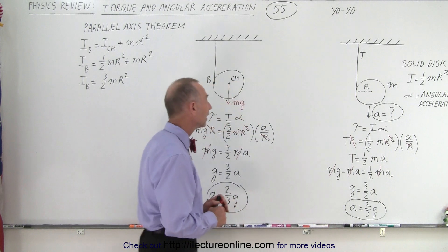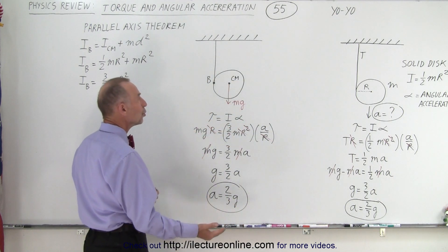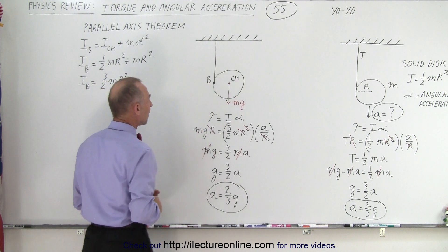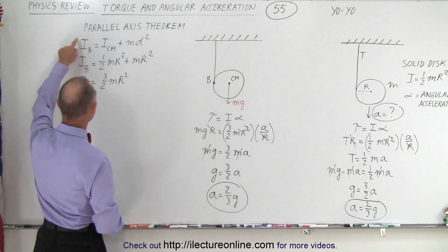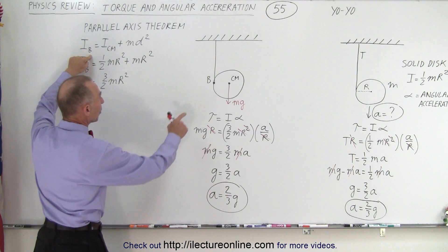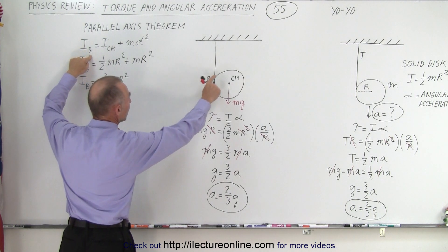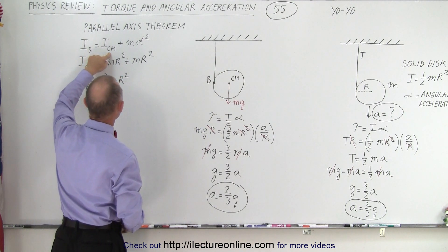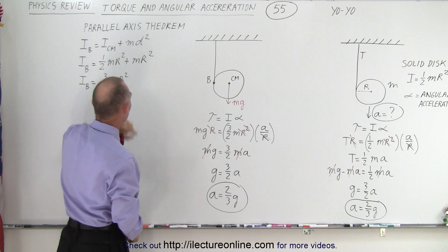Now what happens if we move the point of rotation to b instead of the center of mass? Using the parallel axis theorem, we're going to say that I of b, the moment of inertia relative to b, so now the disc is going to rotate about point b, is the moment of inertia at center of mass plus m d squared.